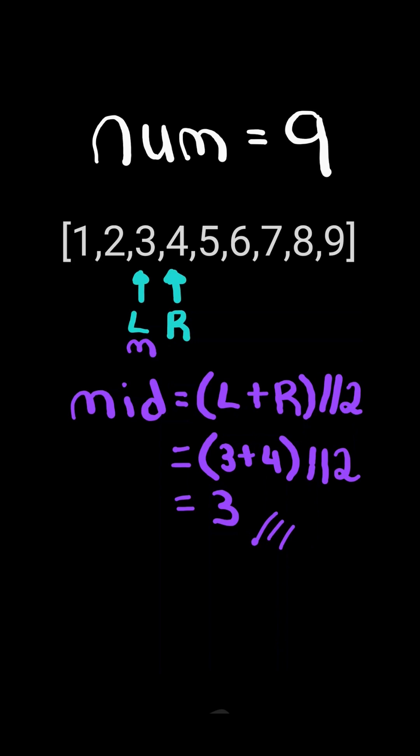Now, mid points to 3. We calculate 3 times 3. It's equal to num, so num is a perfect square.